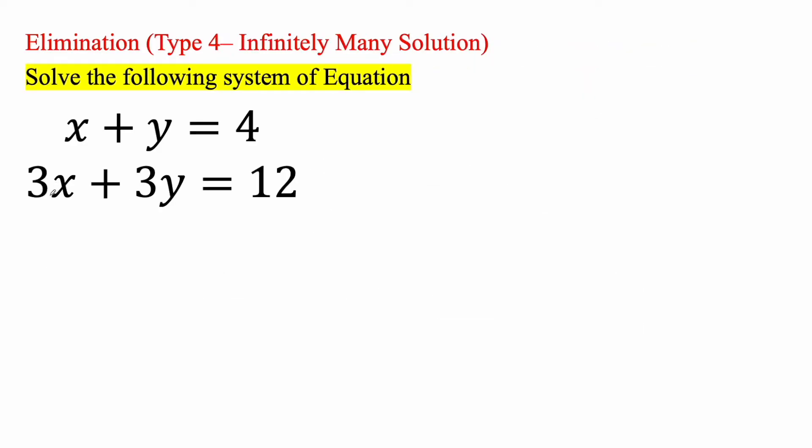Here I see this is a 3x, but this is an x. And if I want this to be a negative 3x, I need to multiply the entire equation by negative 3.